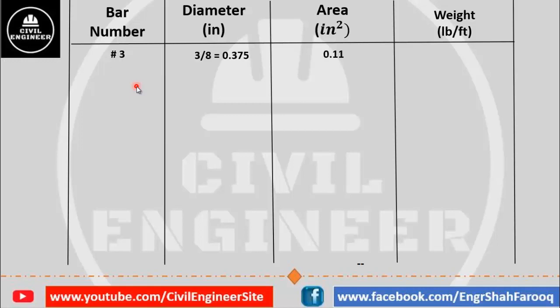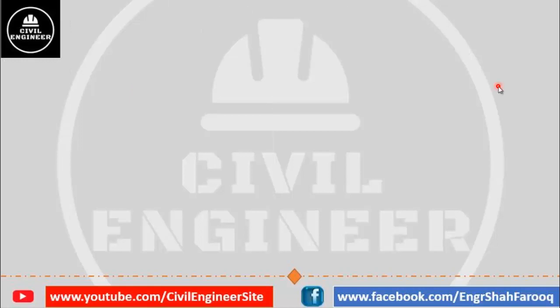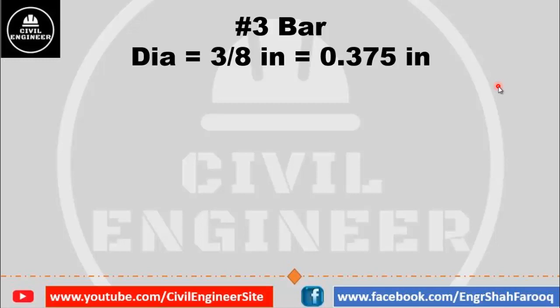The cross-sectional area of the number three bar is 0.11 square inches, while the weight of the number three bar is 0.376 pounds per foot. The diameter of the number three bar is three-eighths inches, or 0.375 inches.